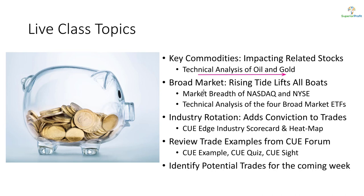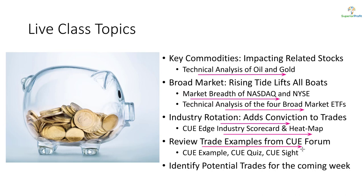When taking trades, it is better to align them with the market direction. We try to understand market direction by studying NASDAQ and NYSE market breadth as well as the technical analysis of the broad market ETFs. Along with aligning trades with the market's direction, we like to align them with industry strength or weakness. We study industry strength and weakness using an industry scorecard and heatmap. We will do this top-down analysis today as usual, and along the way may go through some of the recent trade ideas shared in our traders forum.